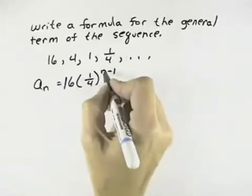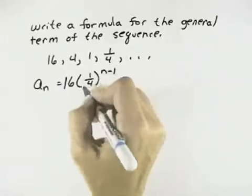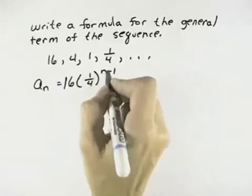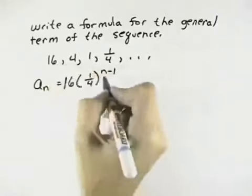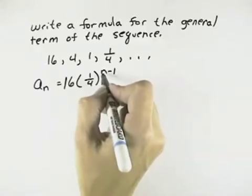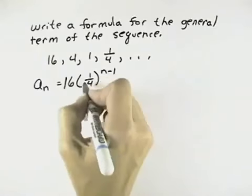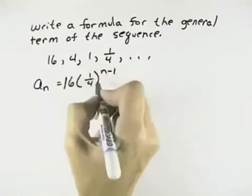So let's see. When n is 1 for my first term, I'd have 1 minus 1 is 0. So that means I'm not multiplying by the 1/4 yet, and I just have the 16. So that works. When n is 2, 2 minus 1 is 1. So that means I'd have the 16 times the 1/4, which is 4.